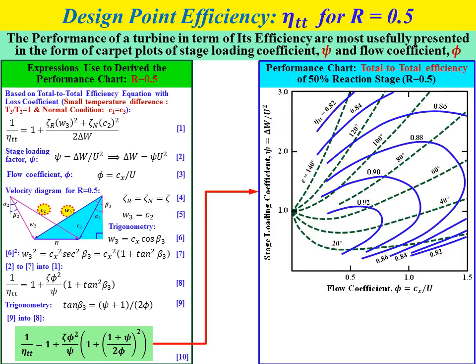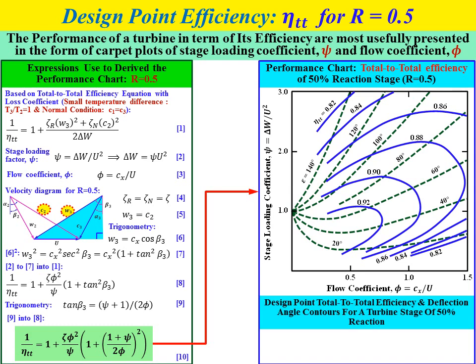This equation is used to plot the performance chart showing total-to-total efficiency for a 50% degree of reaction stage (R equal to 0.5). The performance chart gives data in terms of design point total-to-total efficiency and deflection angle contours for a turbine stage at 50% degree of reaction. The chart shows the relationship of stage loading coefficient versus flow coefficient. The maximum efficiency value is 92%, achieved with flow coefficient in the range 0.3 to 0.7 and stage loading factor in the range 0.3 to 1.1.